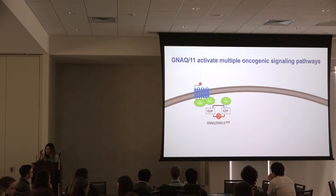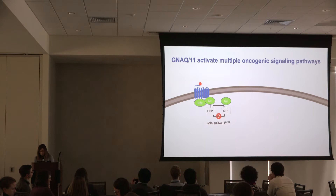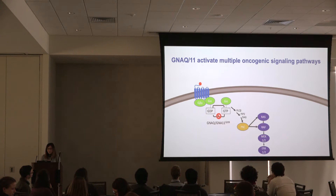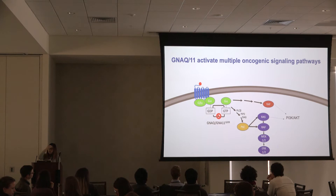GNAQ and GNA11 are homologous genes that encode for G-alpha proteins, which are important for G-protein-coupled receptor signaling. Activating mutations in these genes lead to constitutive activation of multiple oncogenic signaling pathways, including the MAP kinase pathway, the YAP pathway — a critical oncogenic signaling pathway involved in cell proliferation and survival — and the PI3 kinase and AKT pathway, although the mechanisms of how it is regulated in this context are not as clear.